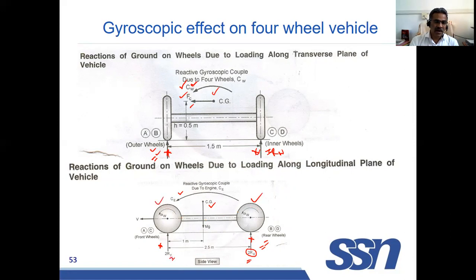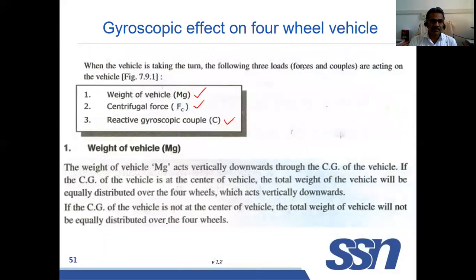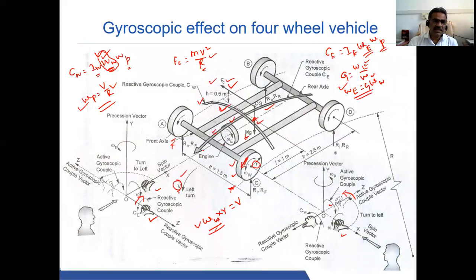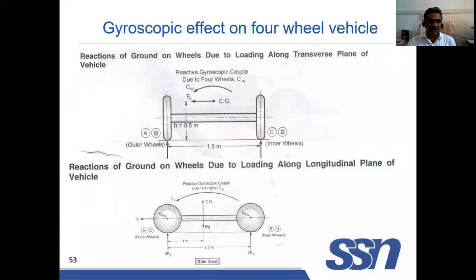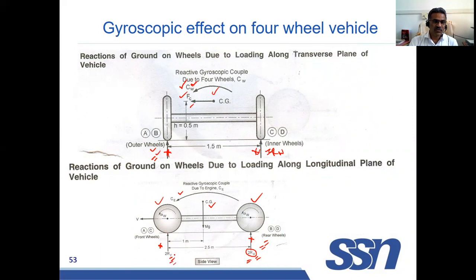We always use 2Rr and 2Rf because when viewed from the side, there are two rear wheels and two front wheels. Rf is the reaction at one front wheel and Rr is the reaction at one rear wheel. So when taking moments, we account for two front wheels and two rear wheels by using 2Rf and 2Rr respectively.